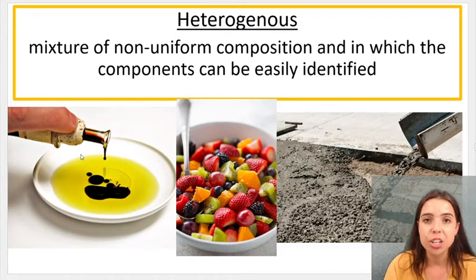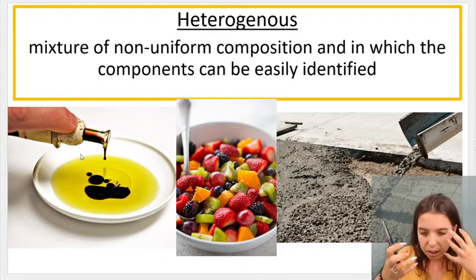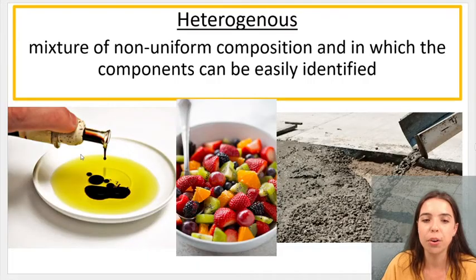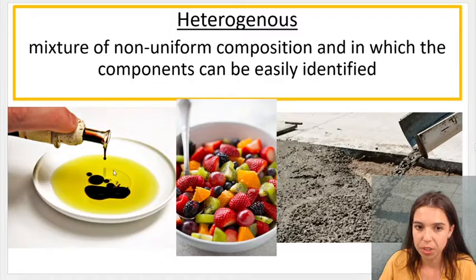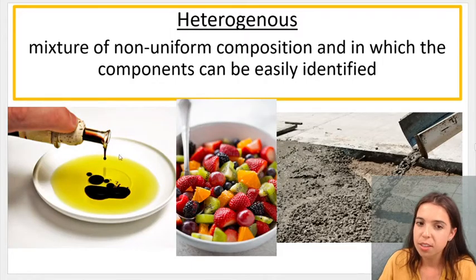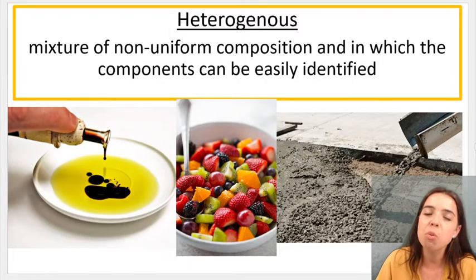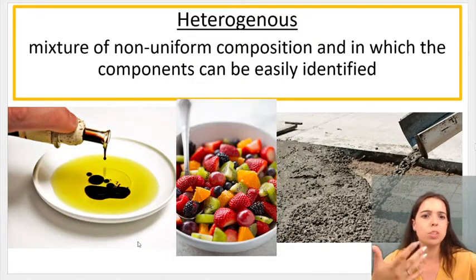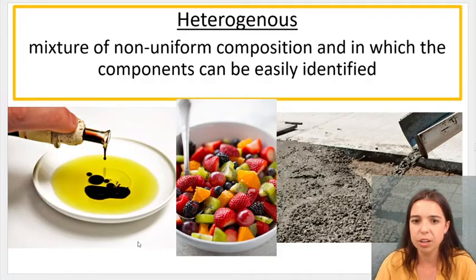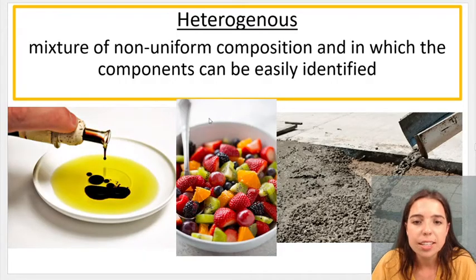Heterogeneous or heterogeneous, on the other hand, is when I can easily identify the components. So on the left, we have oil and water. You can tell the difference. These are immiscible. In other words, they do not mix. They don't mix. You can tell the difference between the oil and the water or the salad dressing and the oil, whatever it is.